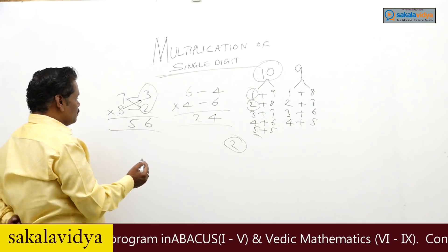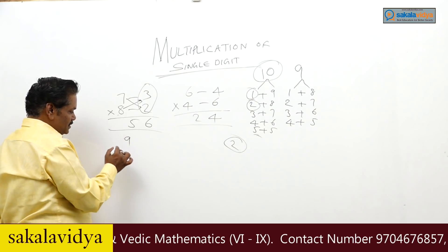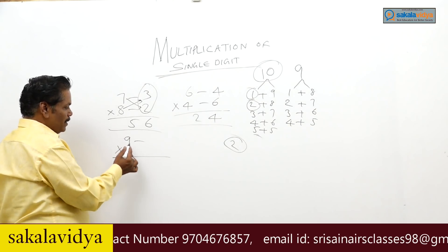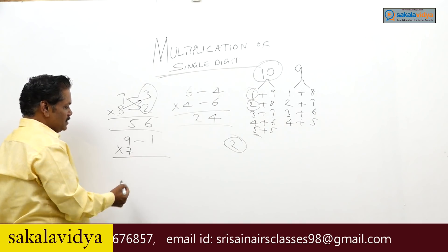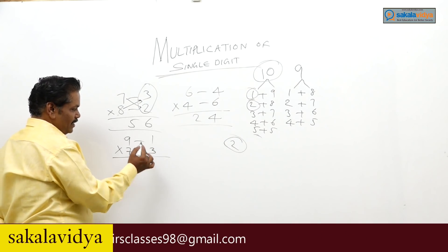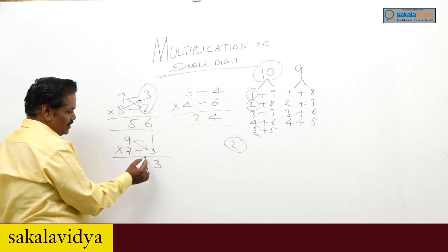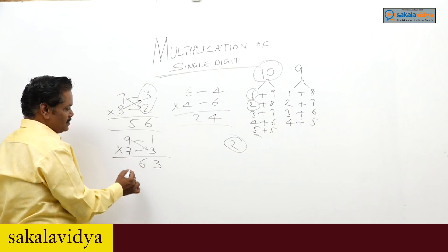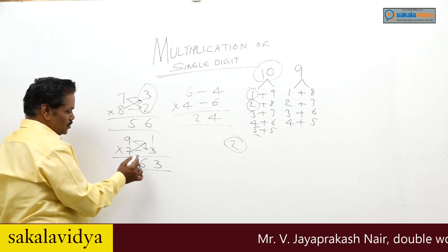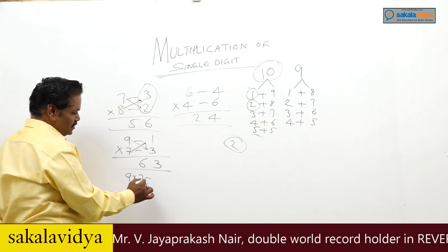We will work out some more examples. 9 into 7: complement of 9 is 1, complement of 7 is 3. 1 into 3 is 3. 9 minus 3 is 6, or 7 minus 1 is 6. So the answer is 63. 9 into 7 is 63.